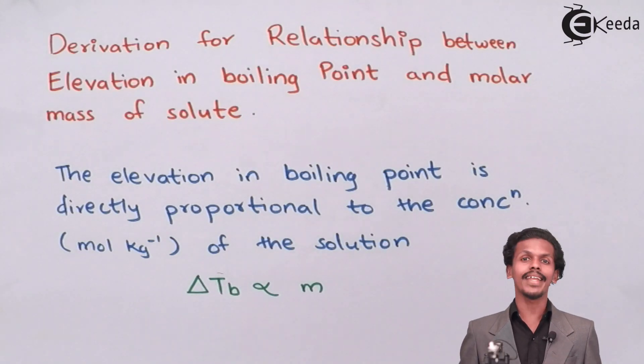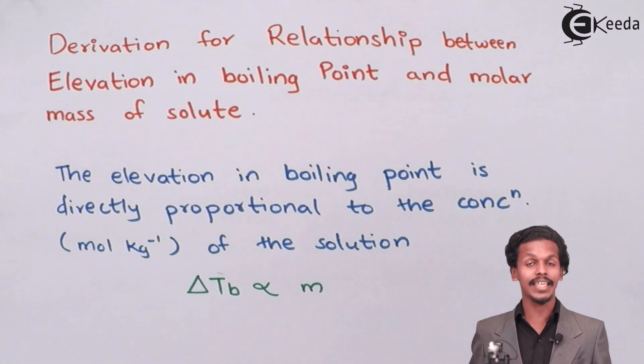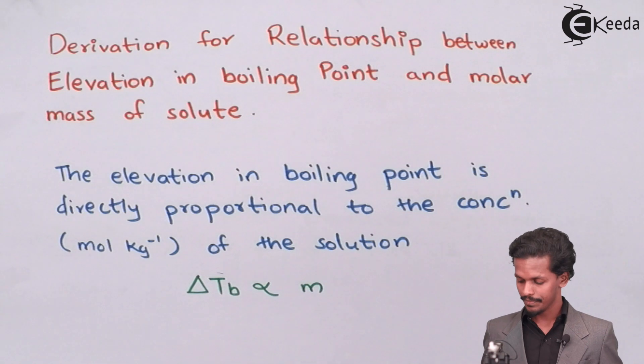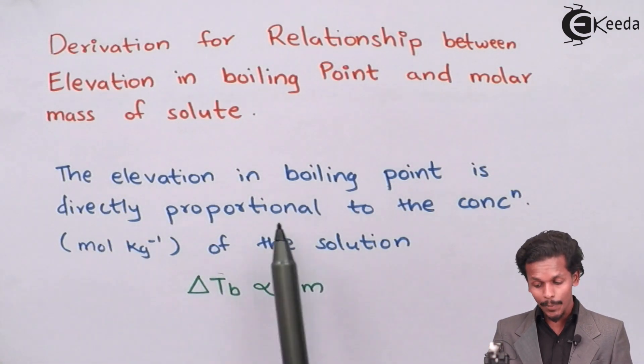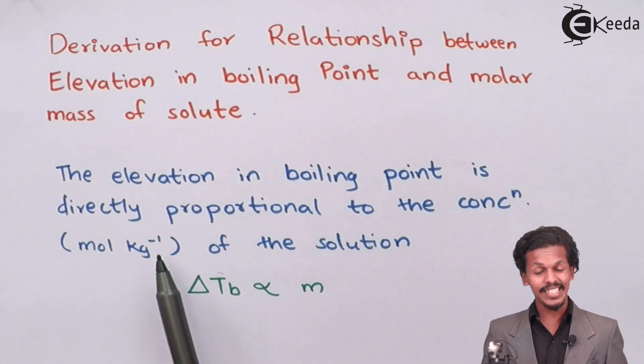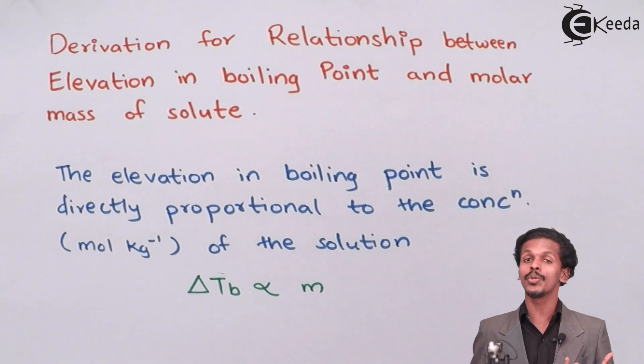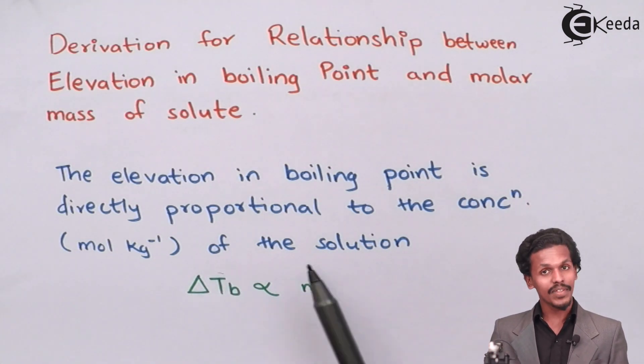Since elevation in boiling point is a colligative property, it depends on concentration of the solute. How it depends and on what concentration, let us see. The elevation in boiling point is directly proportional to the concentration in mol per kg, which is the unit of molality. Hence, the elevation in boiling point is dependent on molality of the solution.